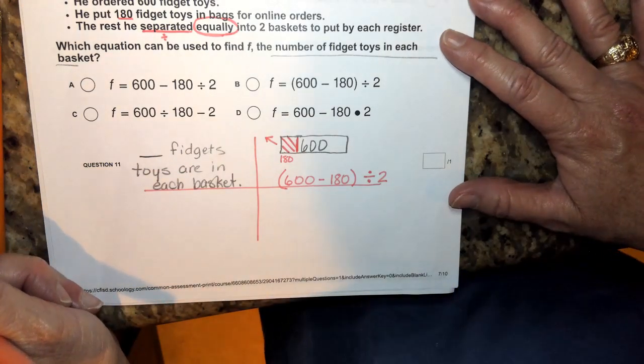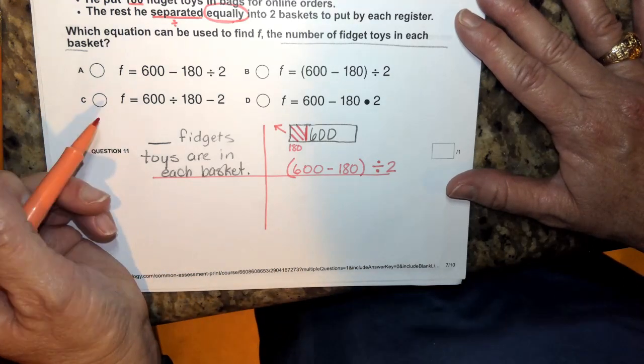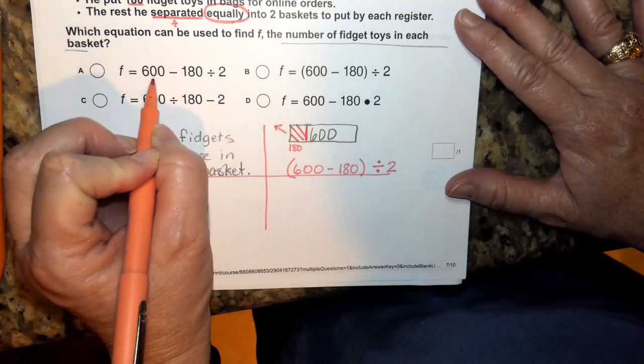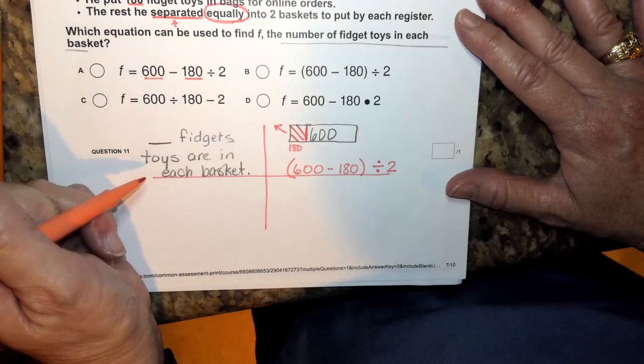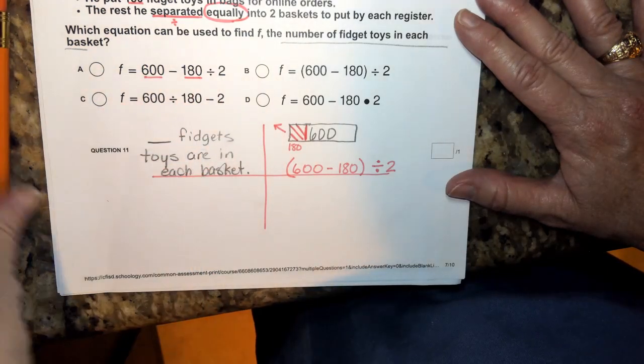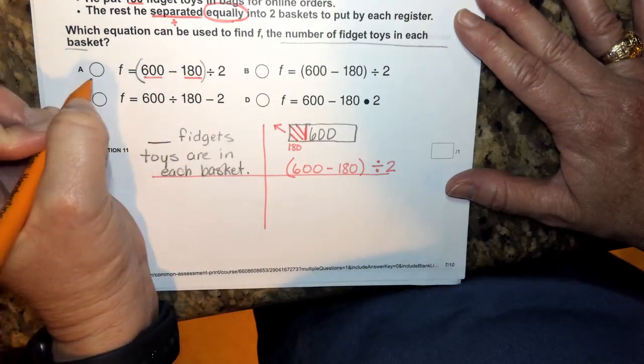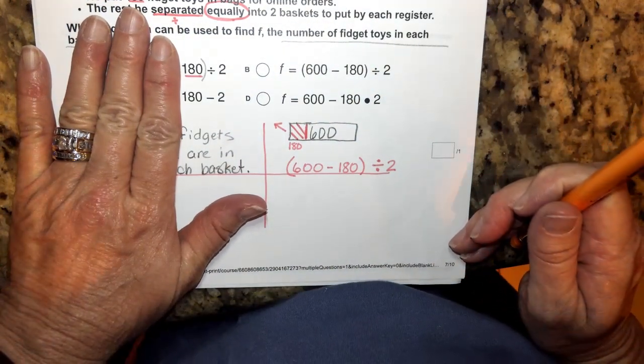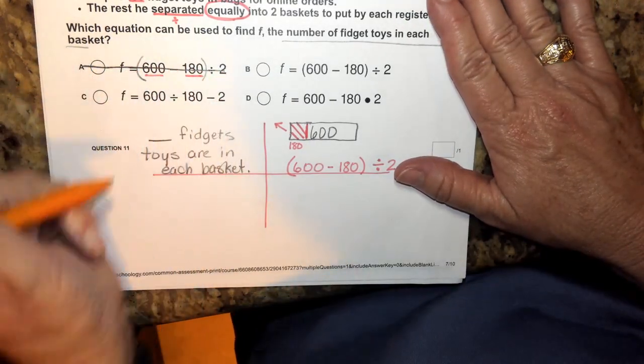All right. So now I have to go back and look at my answer choices. So when I look at these answer choices, just a quick skim, I see that we have 600 minus 180, which looks to be like what we wrote down here. And then I see divide by two. But the problem is it should be in parentheses. Because if it's not in parentheses, then technically you should be dividing 180 by two. And we don't want to do that. So this answer is not correct because it doesn't have the parentheses in the correct place.